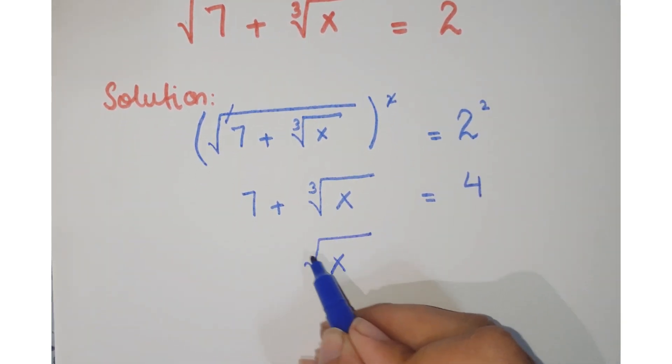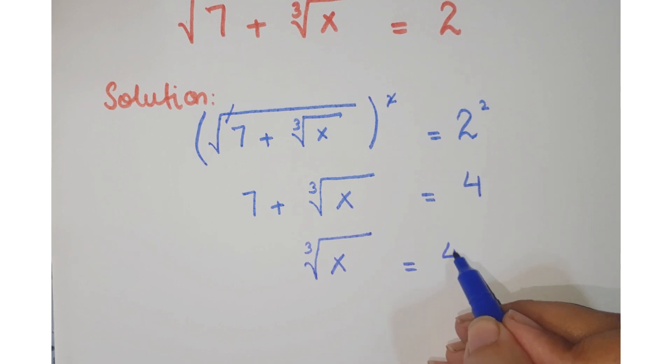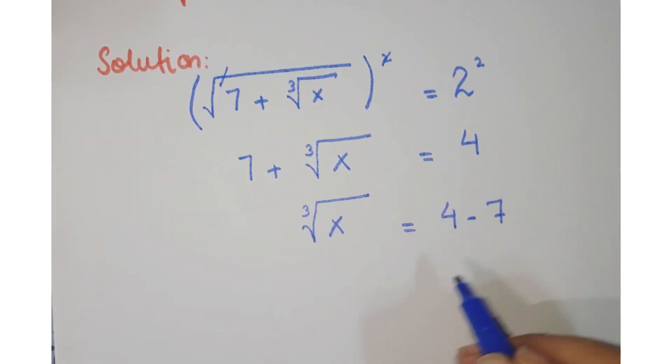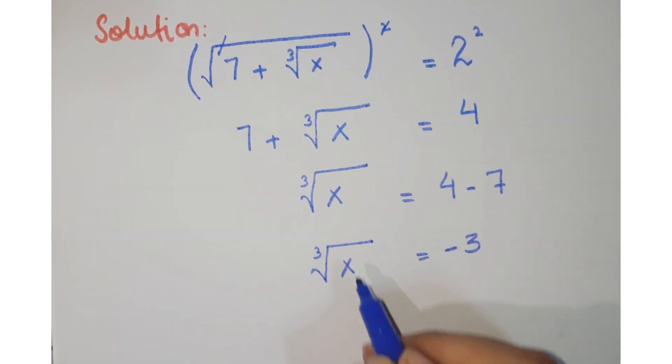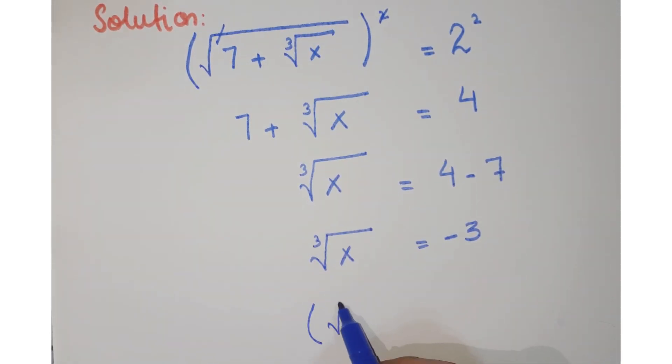Now taking this 7 to the right hand side you get minus 3. Now to remove the cube root, just take the cube on both sides.